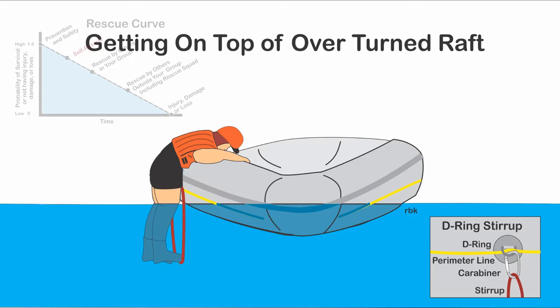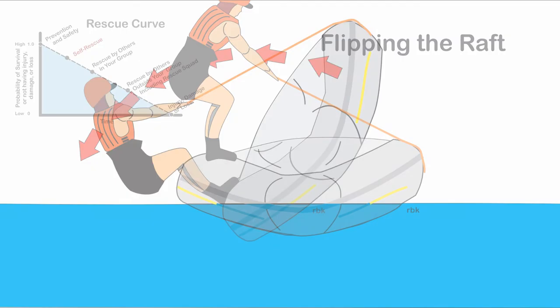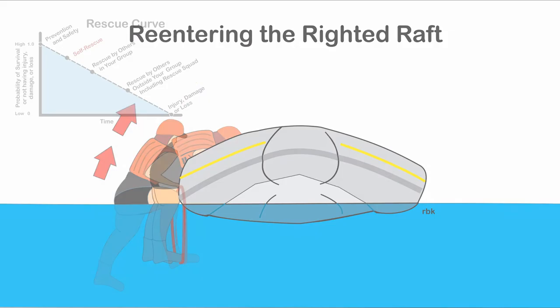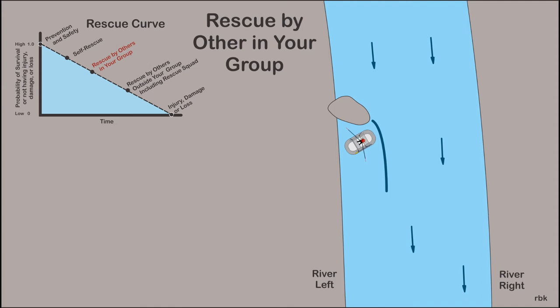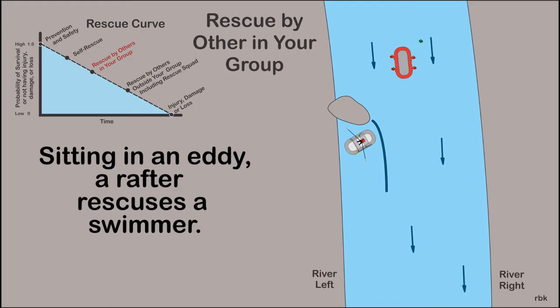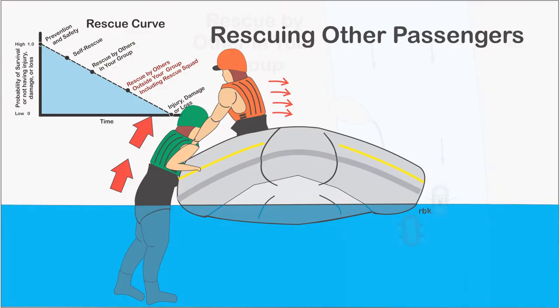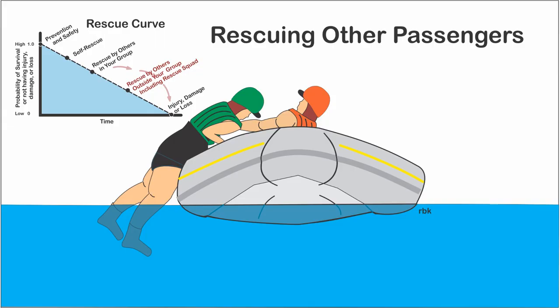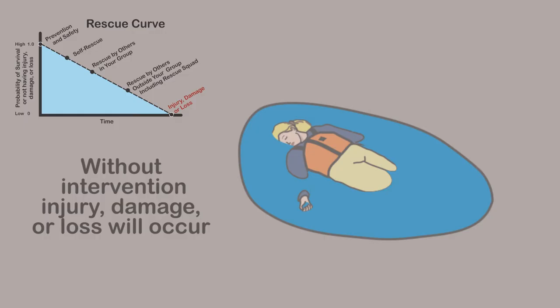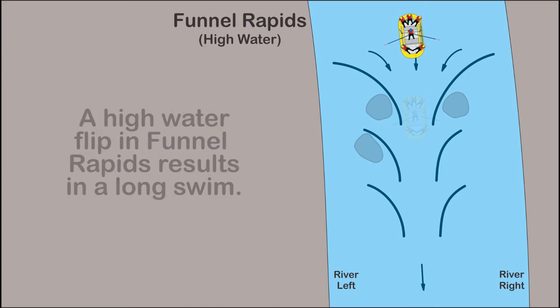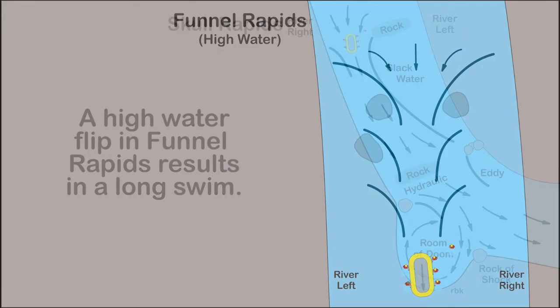Once an incident occurs, such as flipping a boat, self-rescue involves getting the guide on top of the boat and riding it. It could also include swimming the raft into an eddy. Rescue by others in your group can be as simple as picking up swimmers or assisting in flipping the boat by other guides. The distance maintained between boats in the rapids is important in being able to assist others in the group. Since there were no other raft companies or rescue squad available, rescue by others outside the group was bypassed. Without intervention, injury, damage, or loss result. The worst-case scenario is to flip a raft in Funnel Rapids, swim the continuous rapids, and top it off with Skull Rapids.